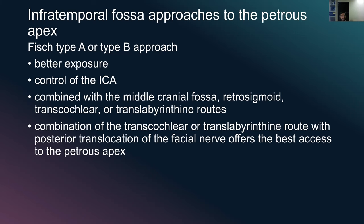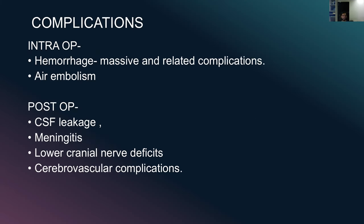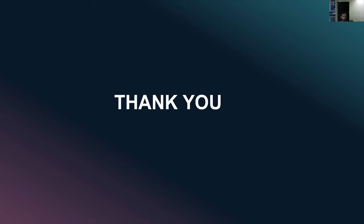Infratemporal fossa approaches - Fish Type A or Type B - give better exposure to the petrous apex and help in control of the internal carotid artery. Combined with middle cranial fossa, retrosigmoid, transcochlear or translabyrinthine routes, the combination of transcochlear or translabyrinthine route with posterior translocation of the facial nerve offers the best access to the petrous apex. Complications include massive hemorrhage, rare air embolism, post-operative CSF leakage if the cavity is not completely sealed, meningitis from retrograde spread of infection, lower cranial nerve deficits and cerebrovascular complications. This was a brief overview on the lesions of the temporal bone. Thank you.